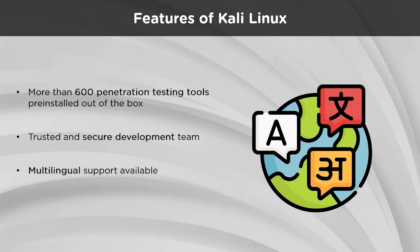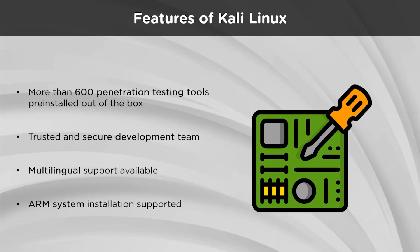Although penetration tools tend to be written in English, the developers have ensured that Kali includes true multilingual support, allowing more users to operate in their native language and locate the tools they need for the job. The more comfortable a user feels with the intricacies of the operating system, the easier it is to maintain a strong hold over the configuration and the device in general. Since ARM-based single board systems like the Raspberry Pi are becoming more and more prevalent and inexpensive, the development team knew that Kali's ARM support would need to be as robust as possible with fully working installations. Kali Linux is available on a wide range of ARM devices and has ARM repositories integrated with the mainline distribution, so the tools for ARM are updated in conjunction with the rest of the distribution.